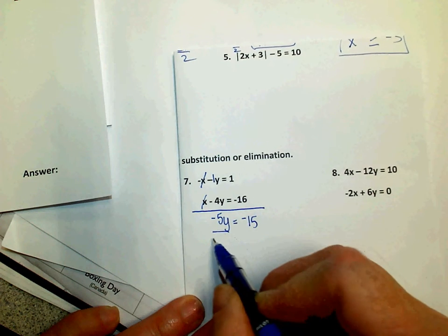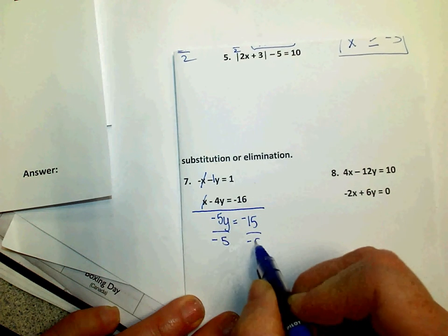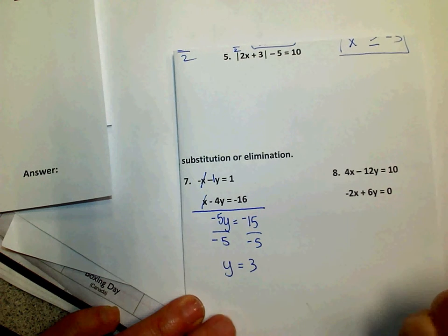To get the y by itself, all I have to do is divide each side by negative 5 and figure out that y is 3.